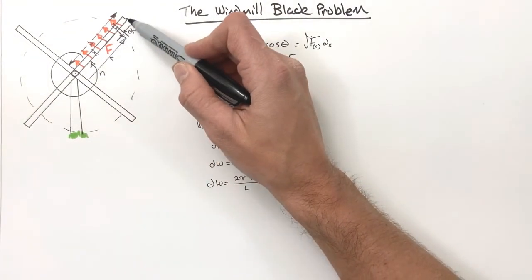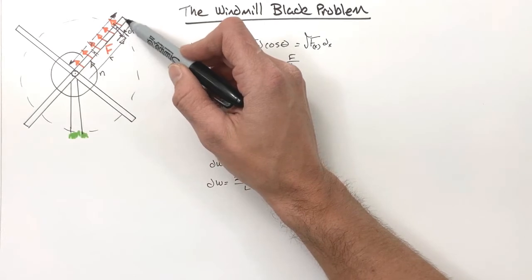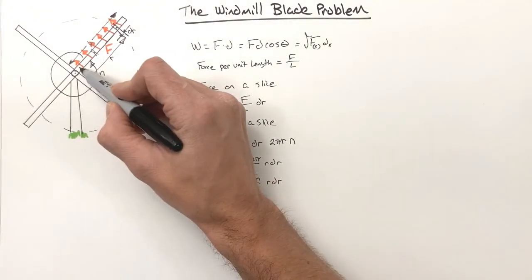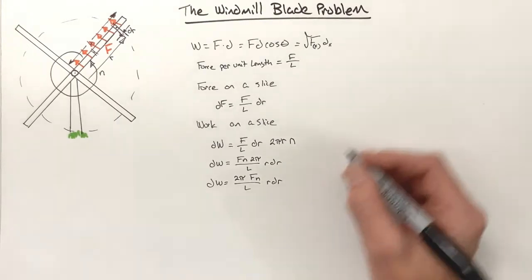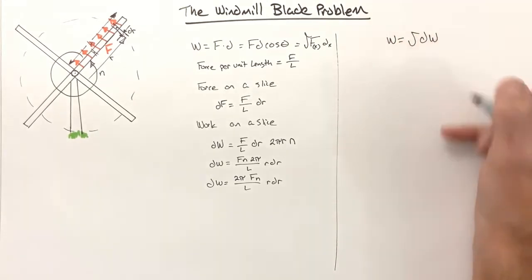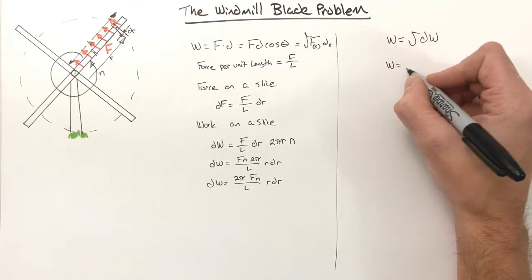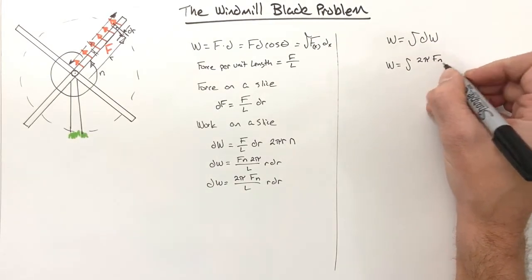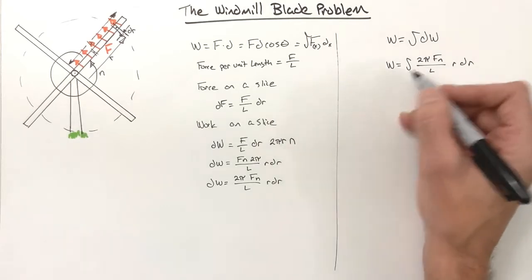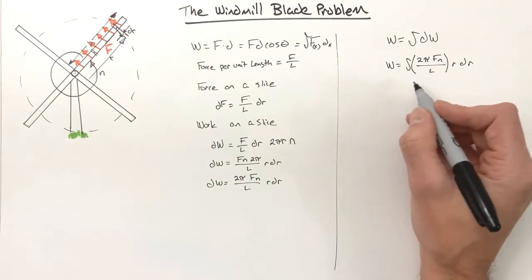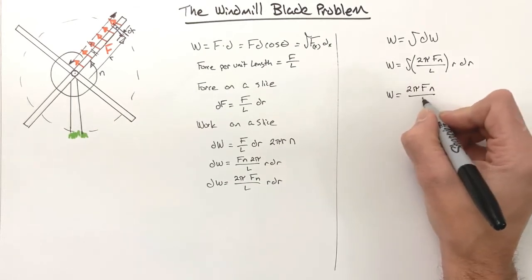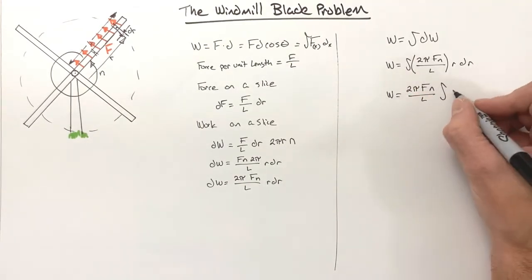That's the tiny bit of work done by one tiny slice. But I want the total work — the work done by the entire blade from radius zero to radius L. To add up infinitely many infinitely small quantities, we integrate. The total work is the integral of (2πFn / L) · r · dr, with the constants pulled out: W = (2πFn / L) · ∫r dr.